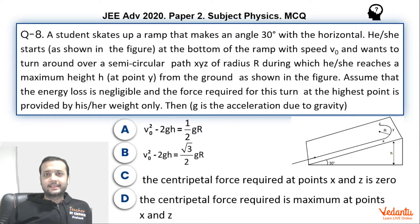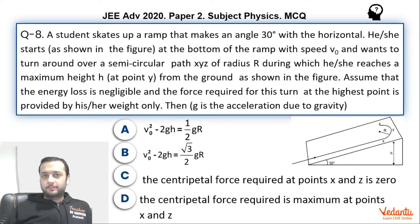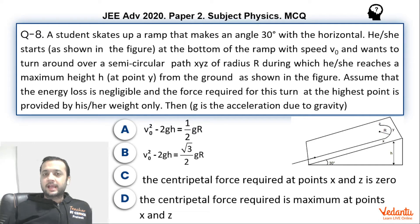Hi dear students, let's see this question that came in JEE Advanced Paper 2 Physics in the year 2020. This was a multiple choice question based on the concept of circular motion and work-energy. The question was simple per se, but due to one of the options I believe there was a slight ambiguity.